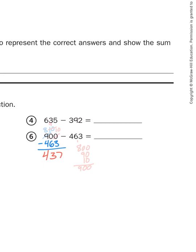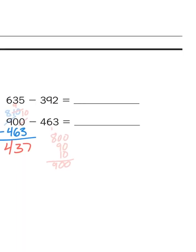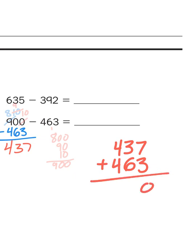Still not convinced? Well, I can always take my difference, 437, and I can add it to my smaller number, 463. And if my calculations were correct, I should get my original top number, which was 900. 7 plus 3 is 10. 10 plus 30 is 40. 40 plus 60 is 100. 400, yes, it all falls into place. So 437 is correct.